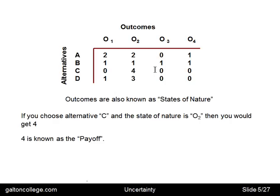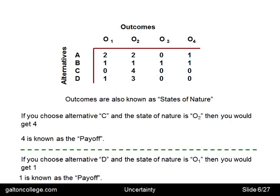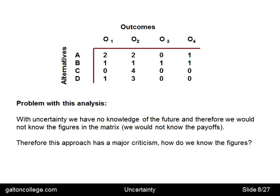If you choose D and the state of nature is O1, then we would get 1 — that's the appropriate payoff. Now, the problem with this analysis: with uncertainty we have no knowledge of the future, and therefore we would not know the figures in the matrix. We have a matrix of payoffs — 2, 2, 0, 1, 1, 1, 1, 1, 0, 4, 0, 0 and so on — but if the future is unknown, how do we know what this matrix of payoffs is? That's a major criticism of this work.